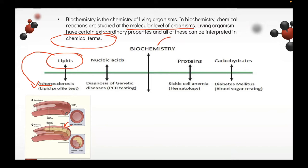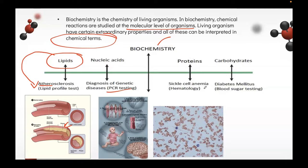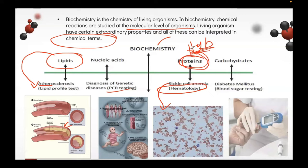Nucleic acids can diagnose genetic diseases using the principle of PCR testing. Proteins can indicate that a patient has sickle cell anemia, as detected in the hematology section. Sickle cell anemia involves an abnormality in hemoglobin, and hemoglobin is a protein — do not forget. Carbohydrates can be used to detect diabetes mellitus using blood sugar testing.